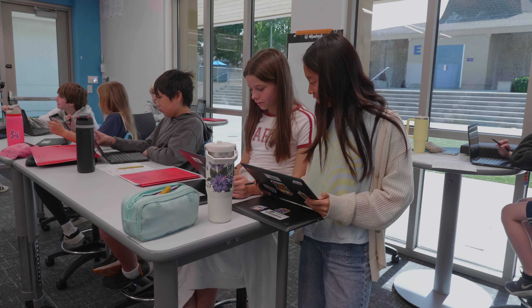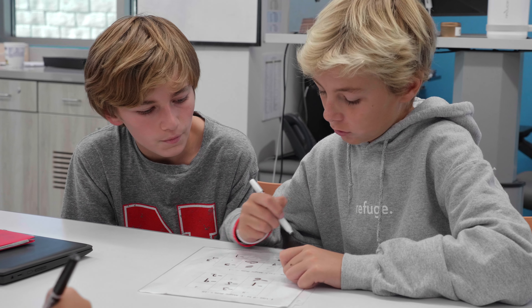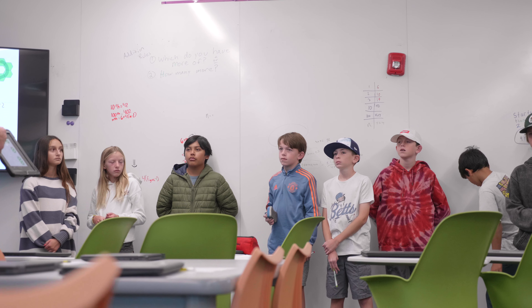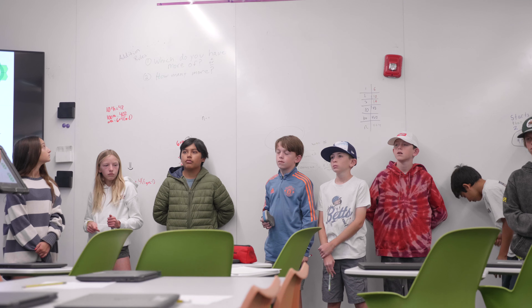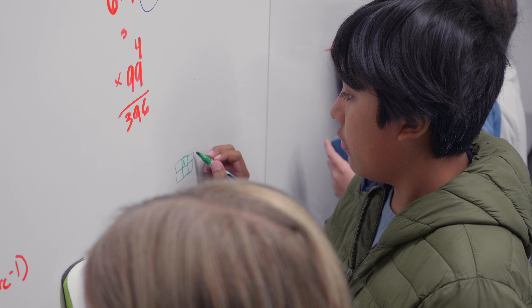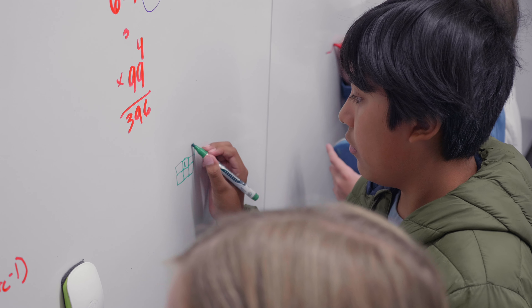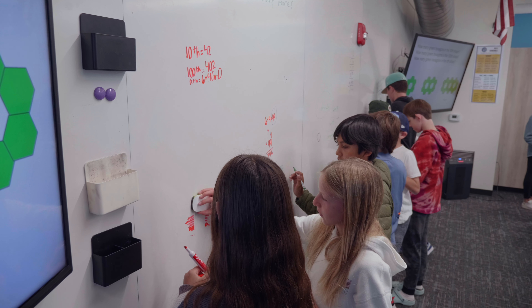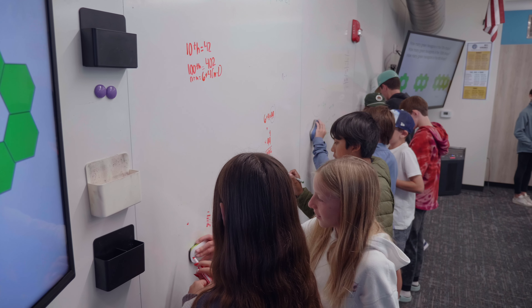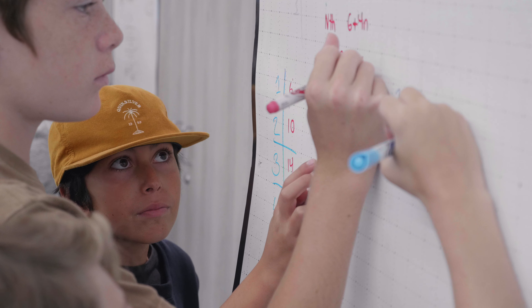Areas in my classroom where I don't like to use tech are when students are exploring new concepts or trying to extend their thinking. I utilize my whiteboard walls so students can work in small groups and use vertical non-permanent surfaces to explore, try things, and make errors. That also allows me to connect with them one-on-one on a non-traditional surface.